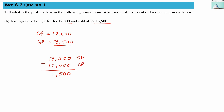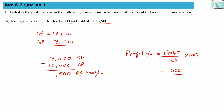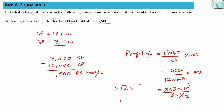Now we find the profit percentage: profit divided by cost price, multiplied by 100. Our profit is 1,500 and cost price is 12,000, multiplied by 100. Simplifying: cancel the zeros, giving 150 divided by 12. Further simplifying: 150 over 12 reduces to 25 over 2.